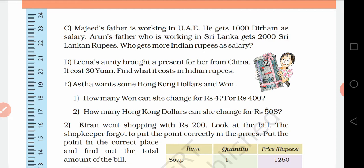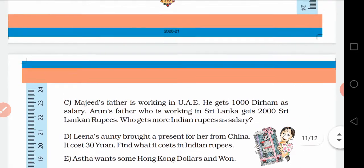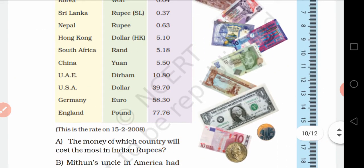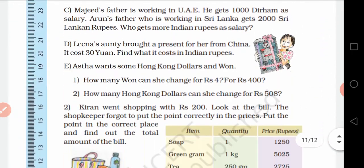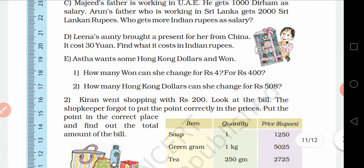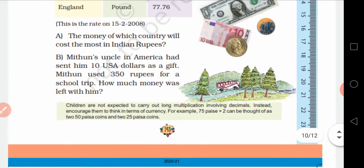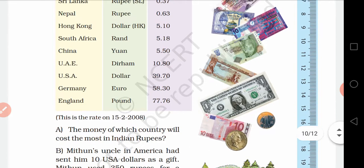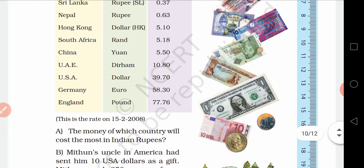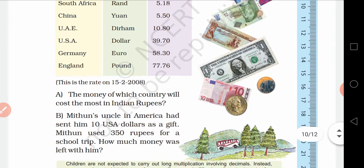Next, how many Hong Kong dollars can she get for 508 rupees? Since 1 Hong Kong dollar equals 5 rupees and 10 paise (5.10), we calculate 508 ÷ 5.10 to find how many Hong Kong dollars that gives.